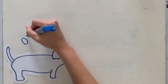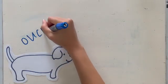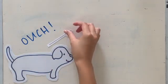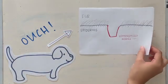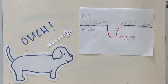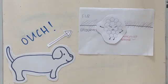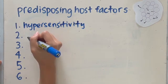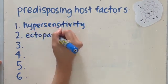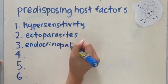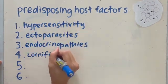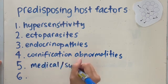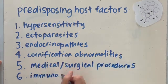However, large numbers of staph can be found in areas with damaged or altered skin and mucosal barriers. Staph infections are more prevalent in dogs than cats and arise due to some form of host compromise. Predisposing host factors determine the likelihood of disease and its severity. These include hypersensitivities, ectoparasites, endocrinopathies, quantification abnormalities, medical procedures, or immunosuppressive disorders.